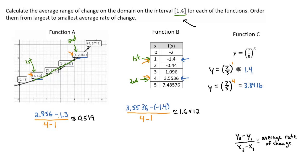So as you can see, I rewrote the equations here, and I plugged in 1 and then 4 for my x values. Use the calculator, and I got my answers as 1.4 and also 3.8416. So that would be like if I just took the points from the table or the graph. Same thing.